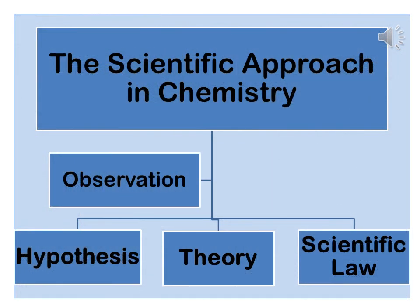The scientific approach in chemistry has the following four steps: number one, observation; number two, hypothesis; number three, theory; number four, scientific law.